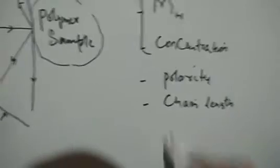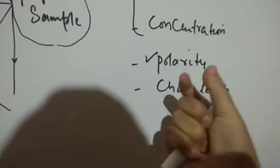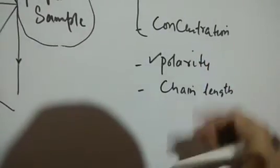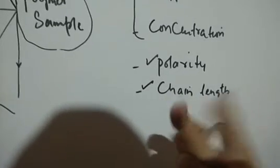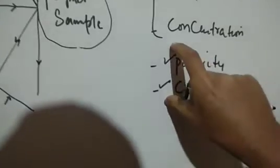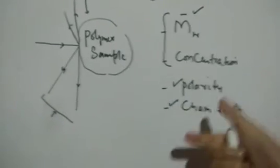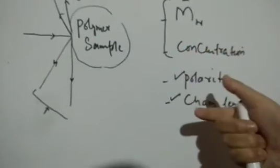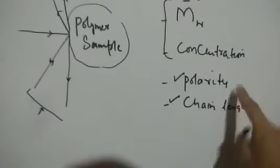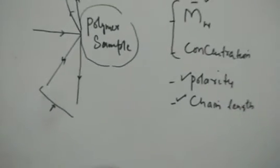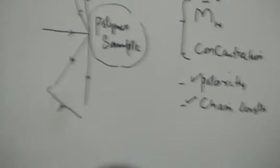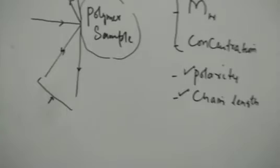These terms are very closely related. Polarity is related to the nature of the polymer — whether its groups are polar, whether the polymer is polar or non-polar. And chain length — whether its polymer chains are smaller or larger in length. This basically indicates the nature of the polymer. So the light scattering method can give us not only quantitative but also qualitative data about the polymer — polarity, chain length, and weight average molecular weight.